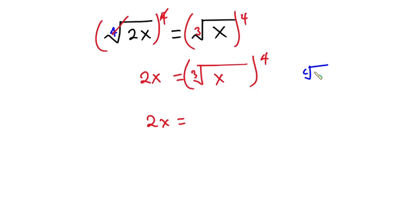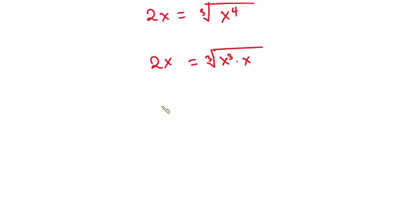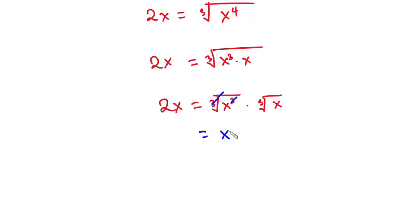Now let's focus on the right-hand side. If we have the c-th root of a, raised to the power b, this can be written as the c-th root of a to the power b. So we can write this as the cube root of x to the fourth power. Now x to the fourth power can be written as x cubed times x, giving us the cube root of x cubed times the cube root of x. The cube cancels the cube root, leaving us with x times the cube root of x.